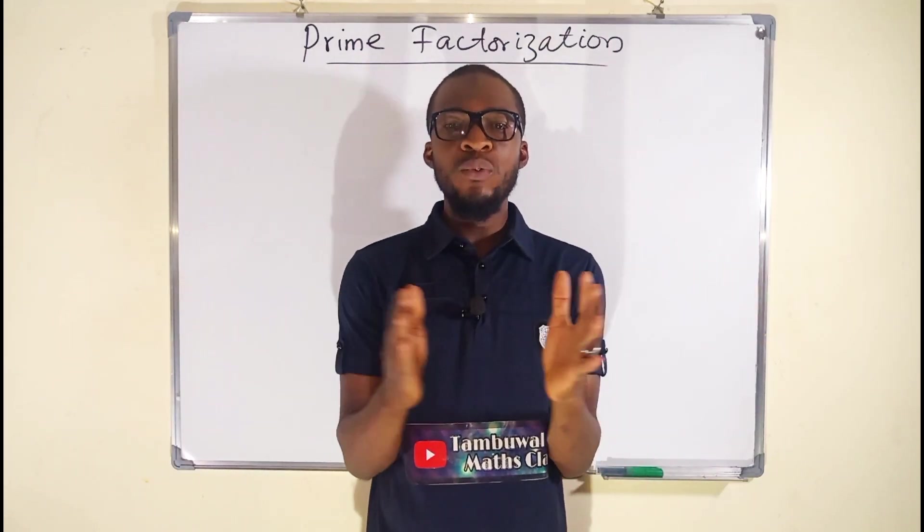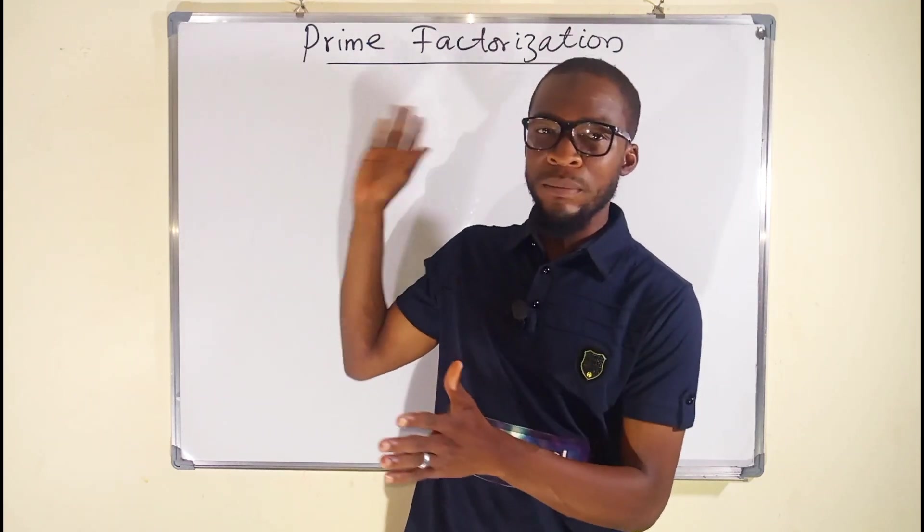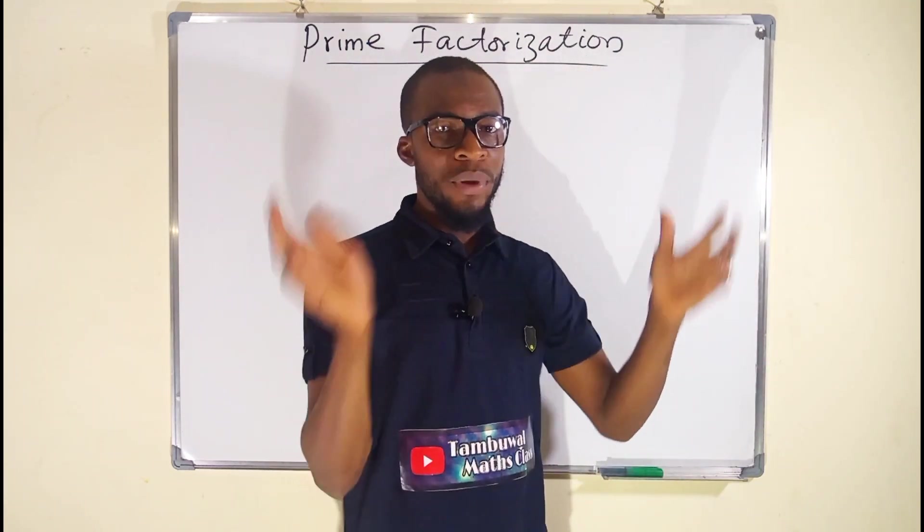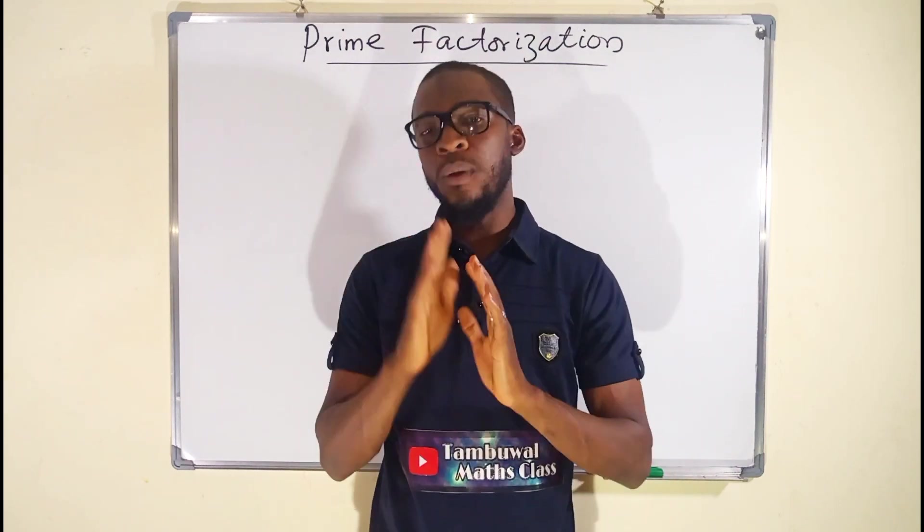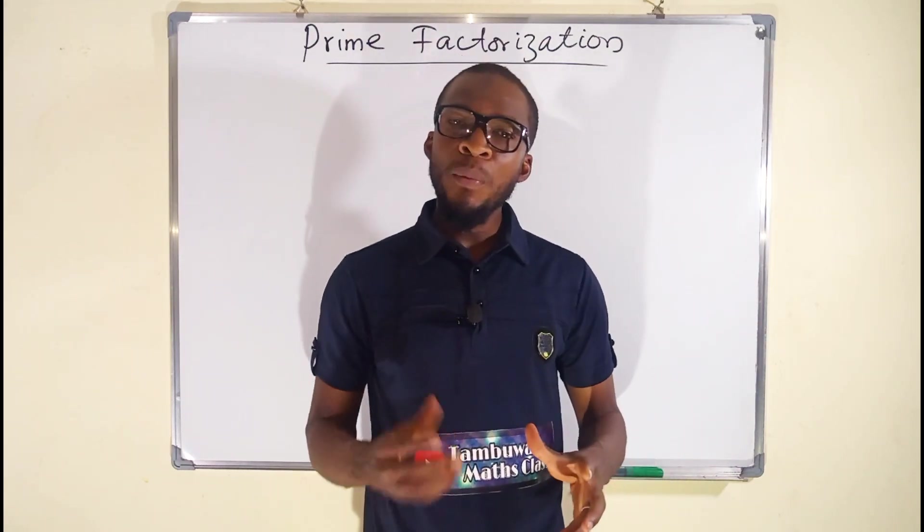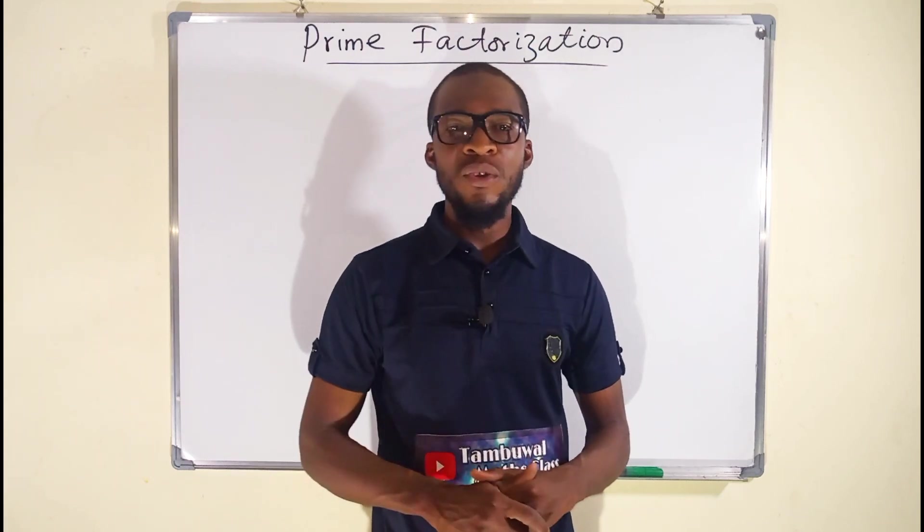So if you combine the two statements, prime and factors, prime factors of any number are the factors of that number that are also prime. So how can we obtain the prime factorization of any number?